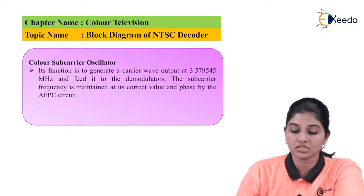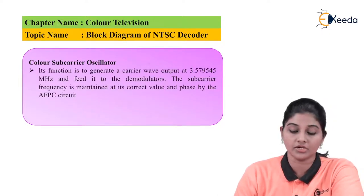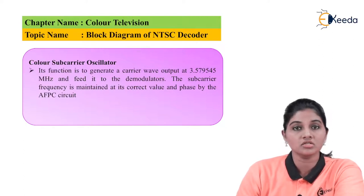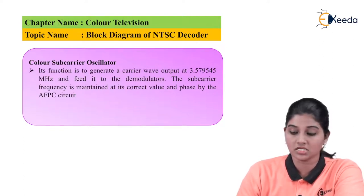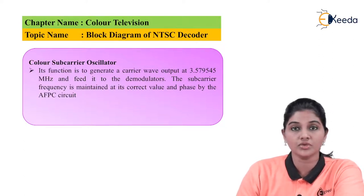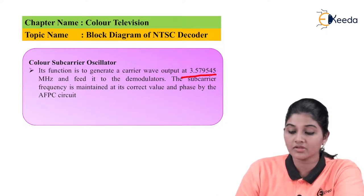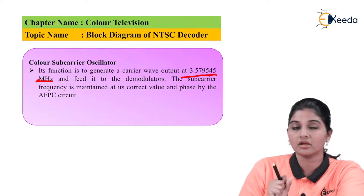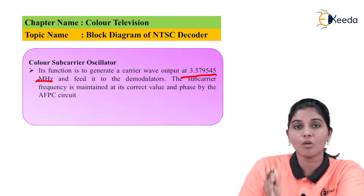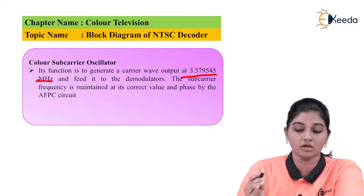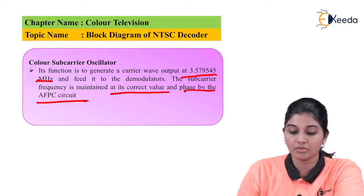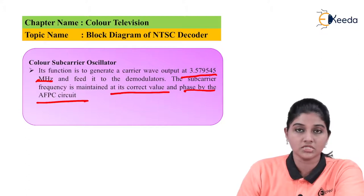The next block is the color subcarrier oscillator. Its function is to generate a sinusoidal wave or carrier signal having a frequency of 3.579545 MHz. The value is precise so that it provides compatibility between the monochrome and color system. The subcarrier frequency is kept at the correct value and phase by the AFPC circuit.